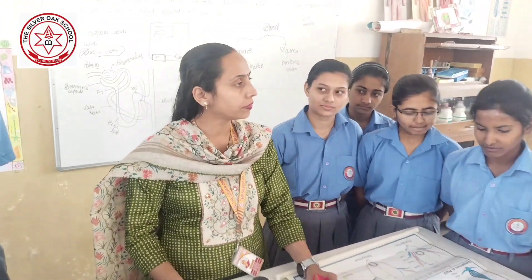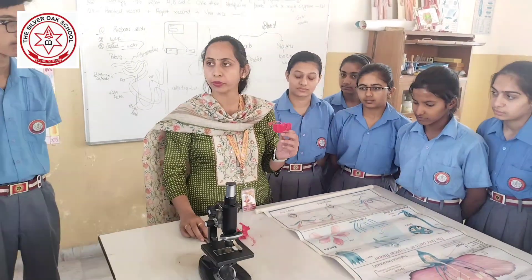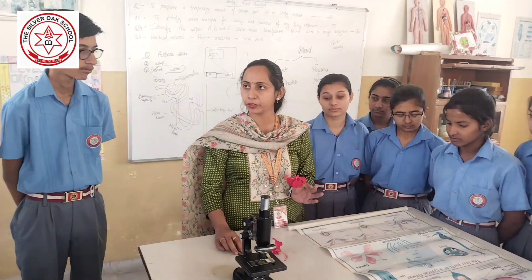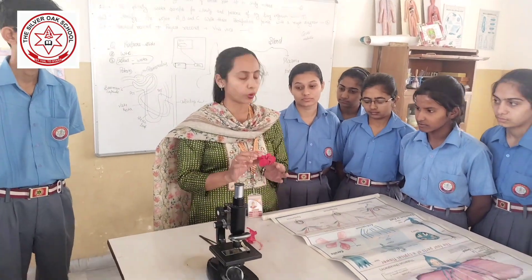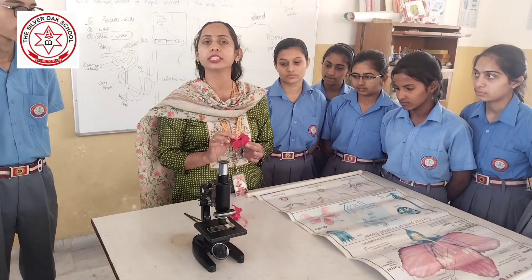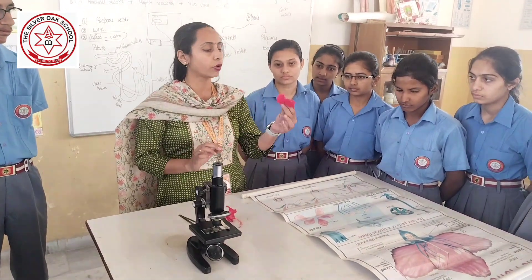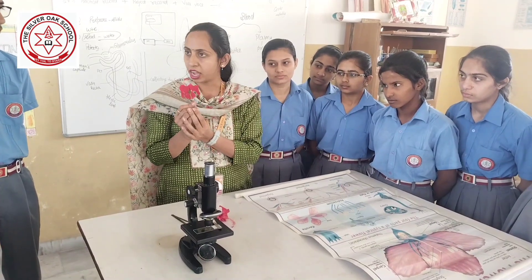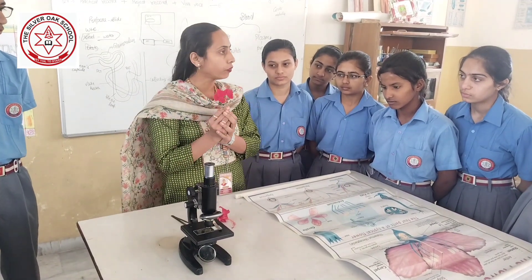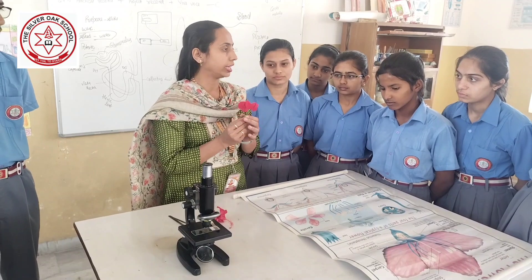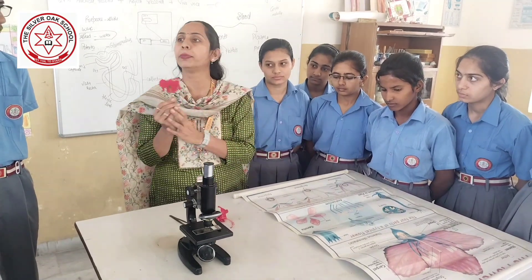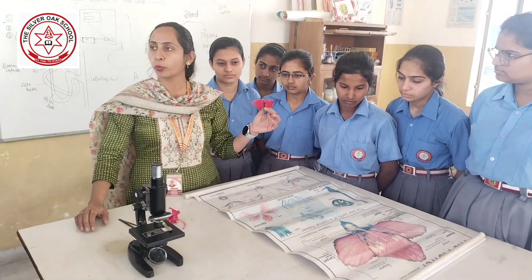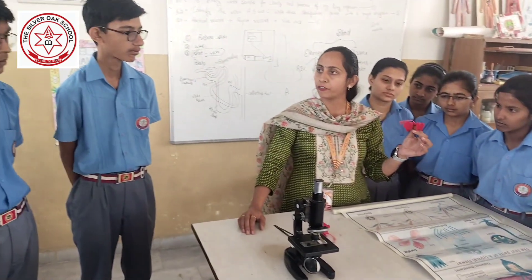Good morning everyone. Today we will cover our topic — studying the different parts of a flower — and we will also cover one more experiment from our syllabus: what is emasculation and what is bagging. When a flower arises in a plant, it involves many hormones. The ABC hormones are responsible for making a flower.